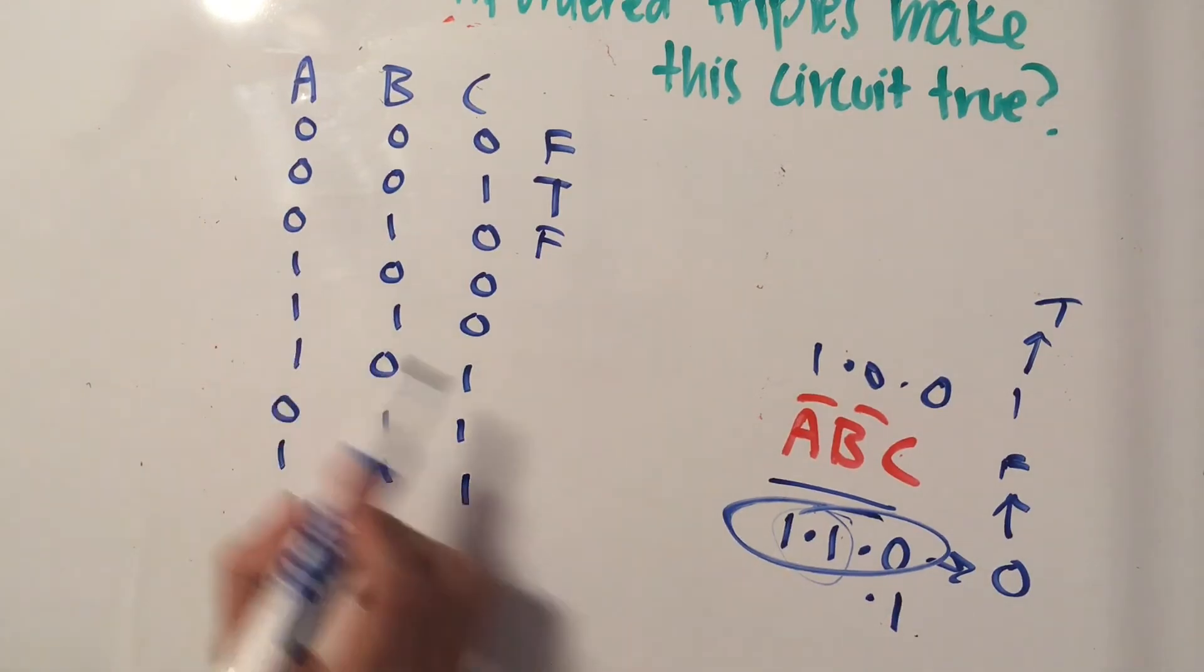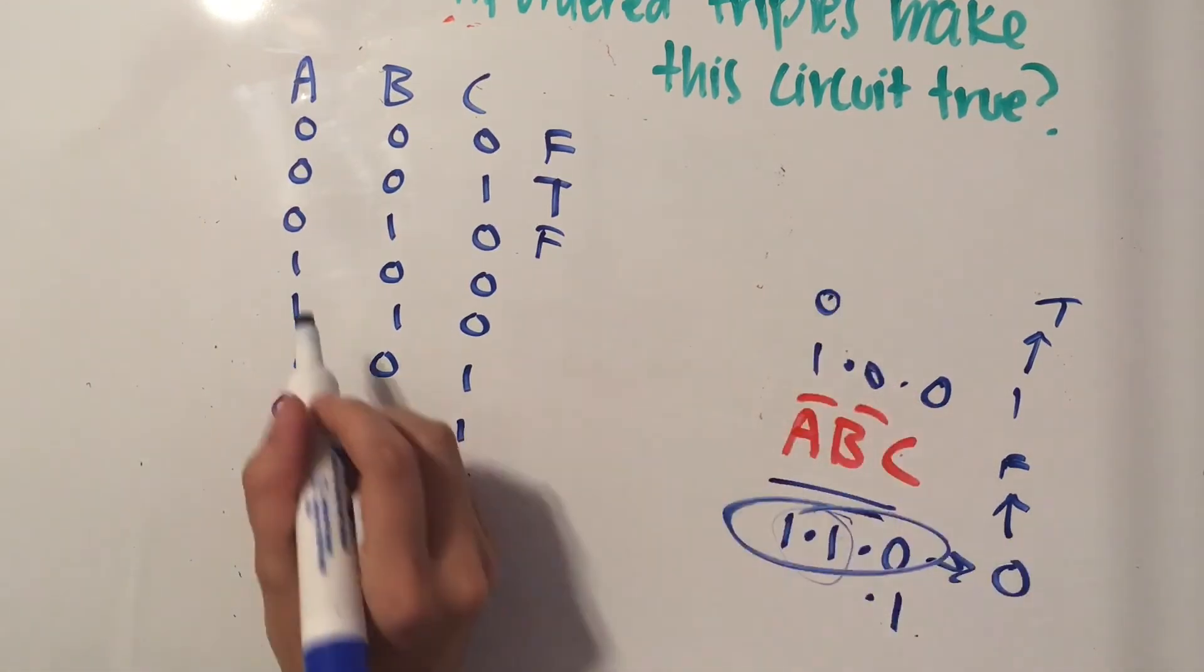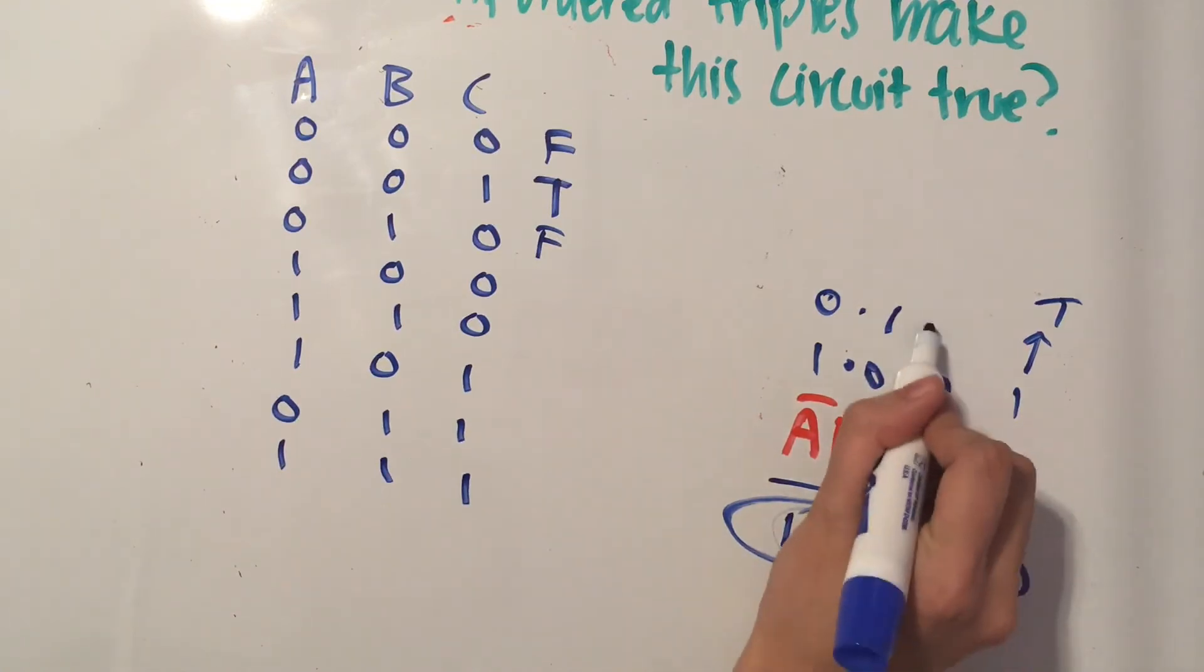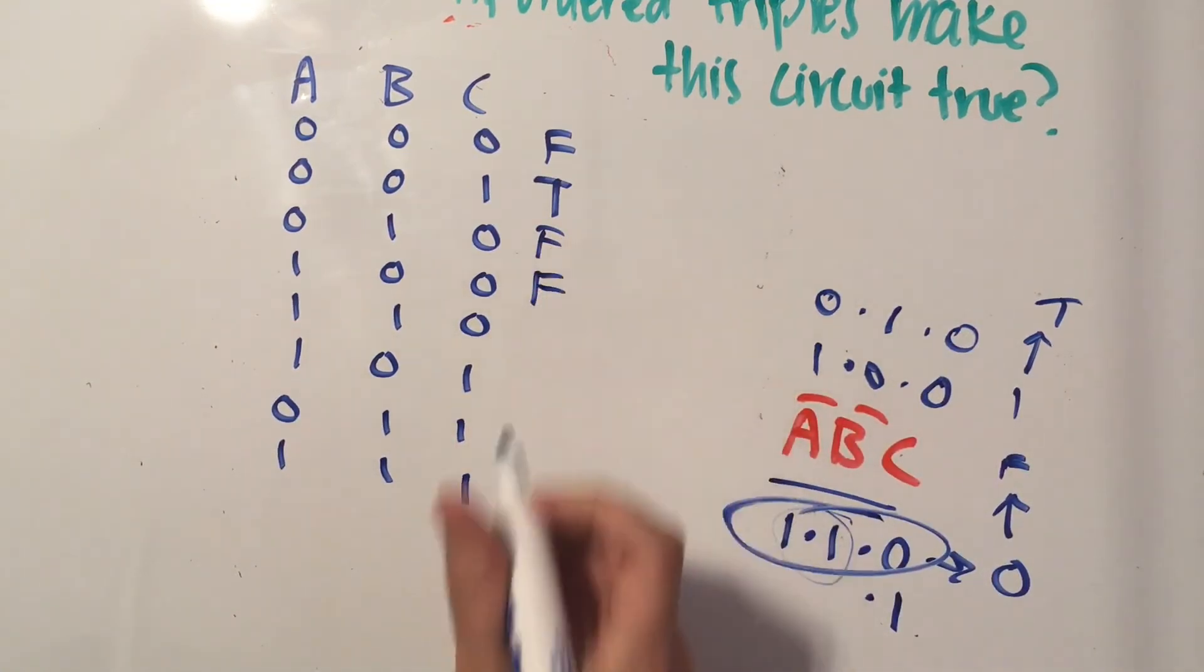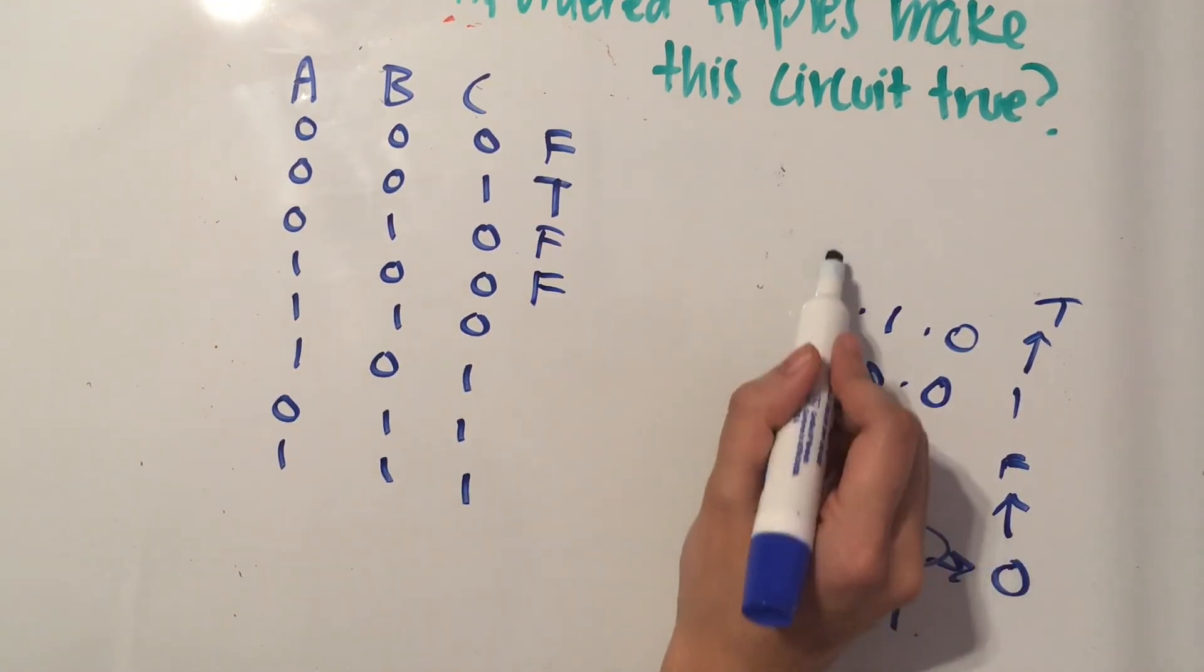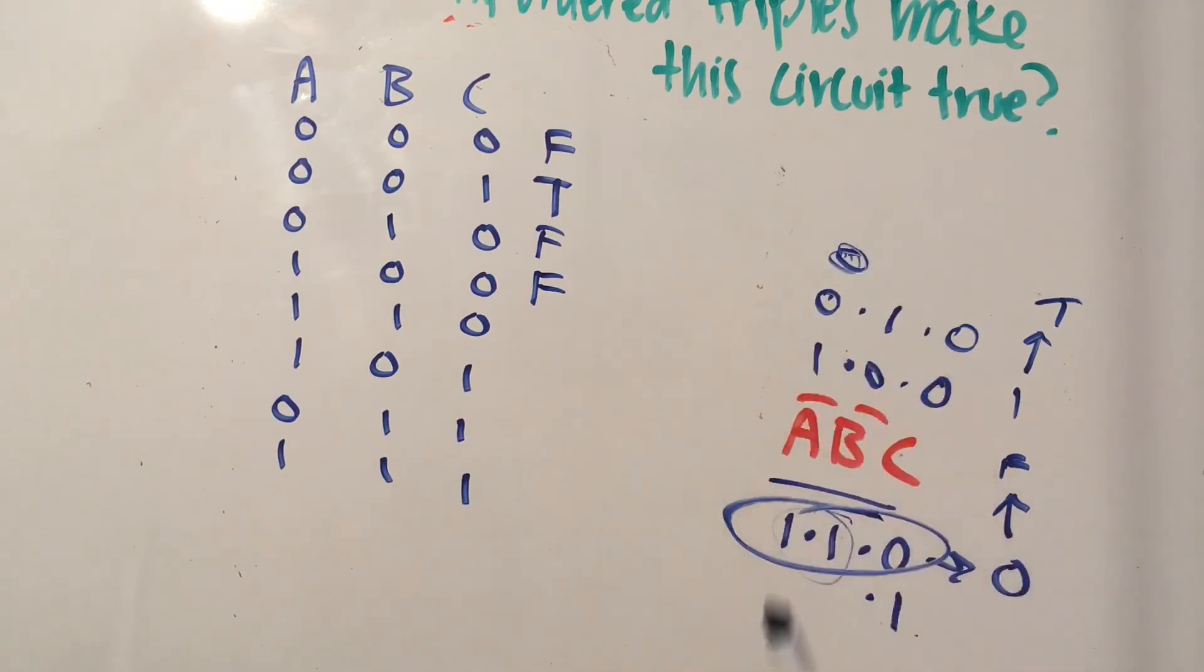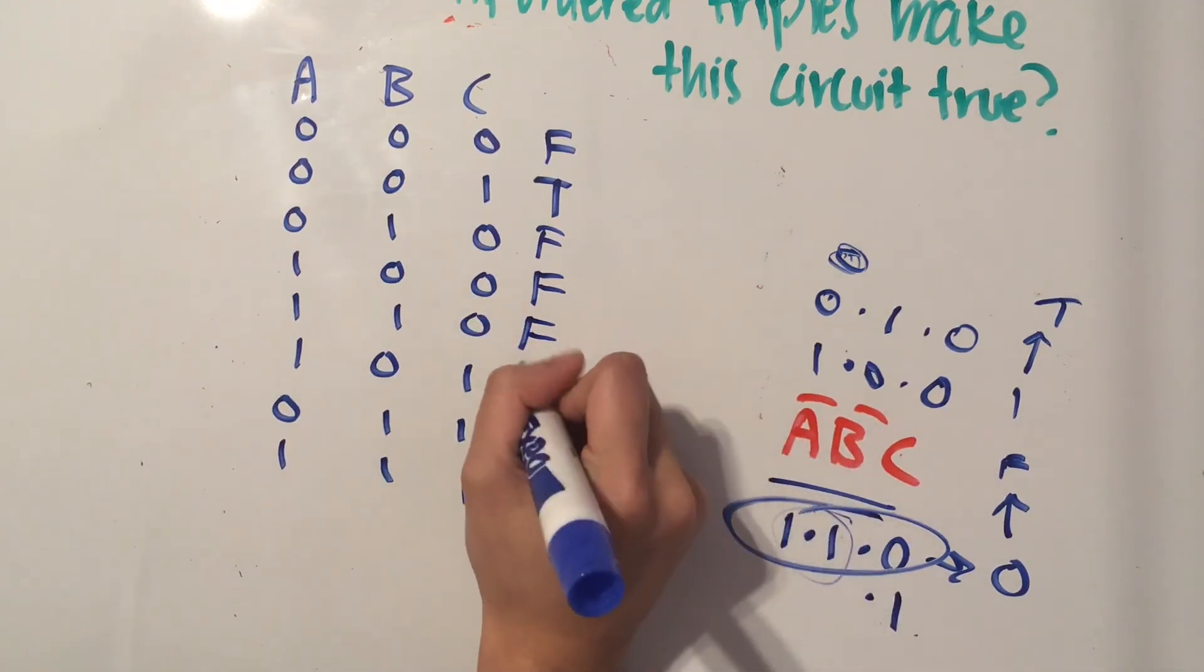Okay, so now let's try A as one. So NOT A is zero, NOT B is one, C is zero, that still gives us false. And then NOT A is zero. At this point, if we see a zero, we could just move on to the next one. So NOT A is zero, so that's false.